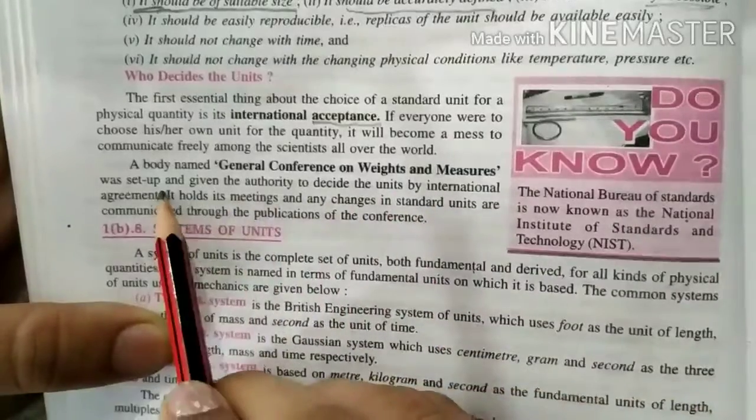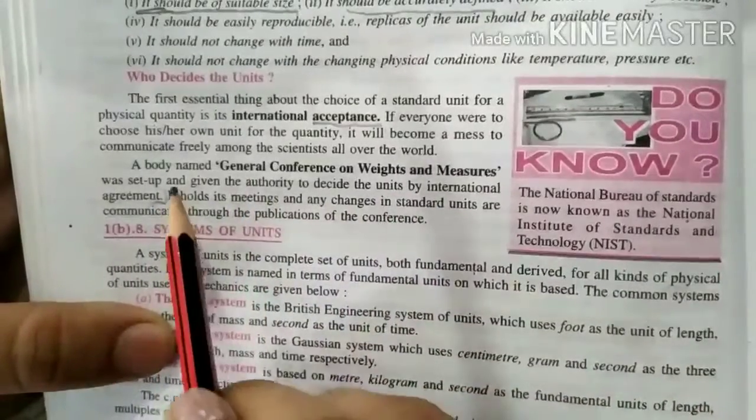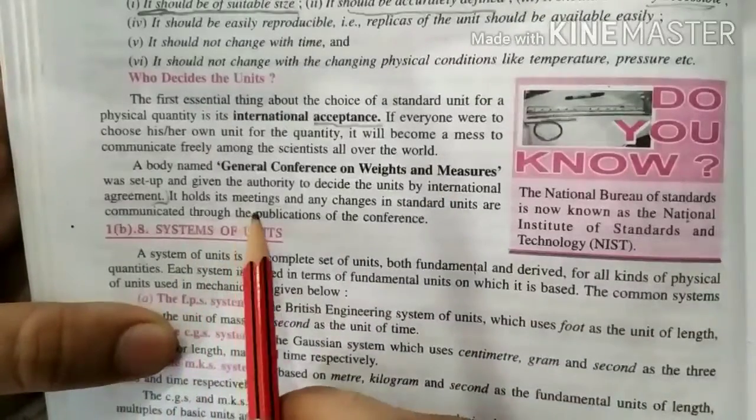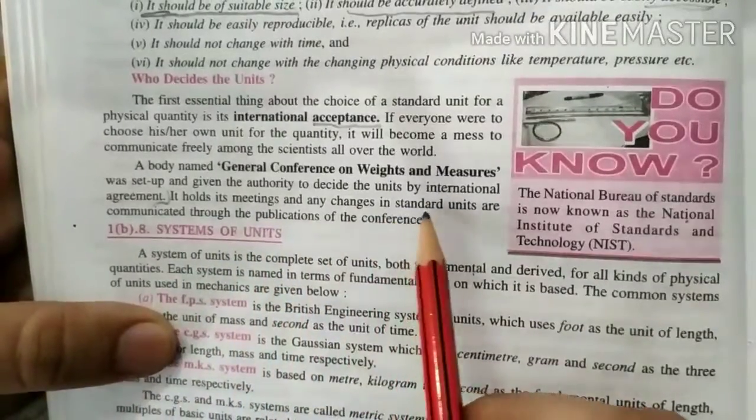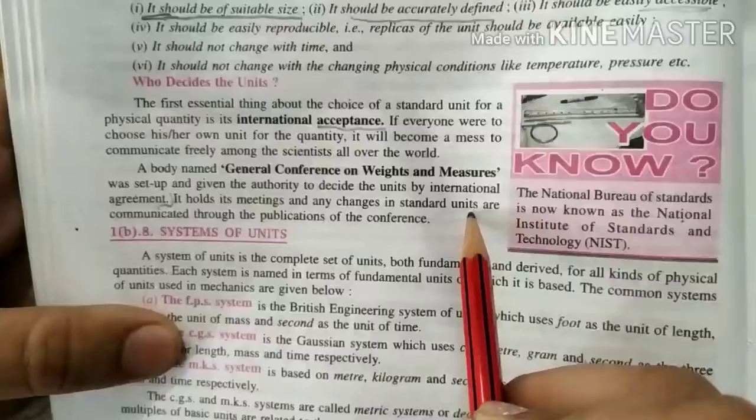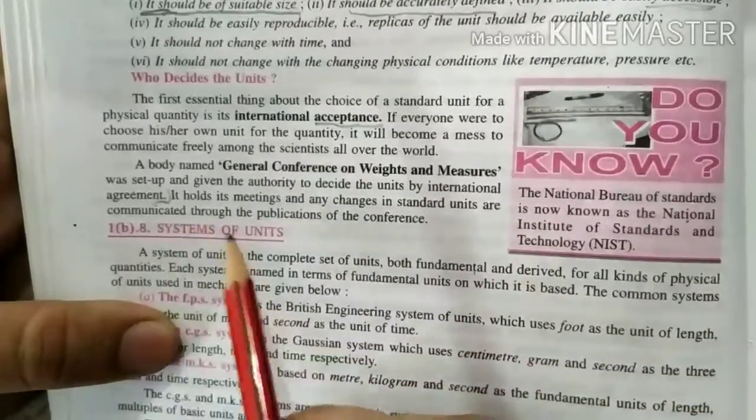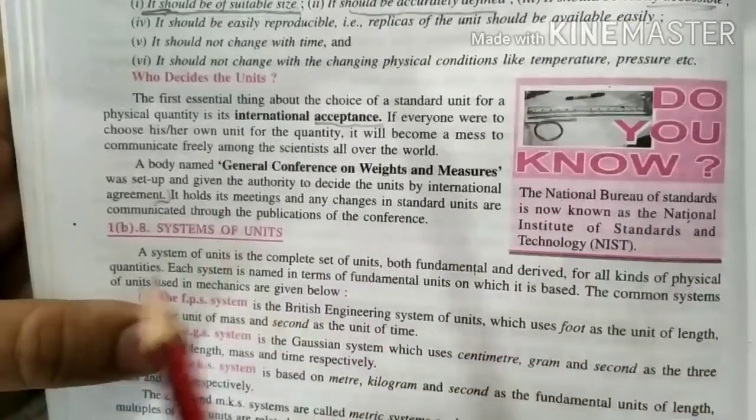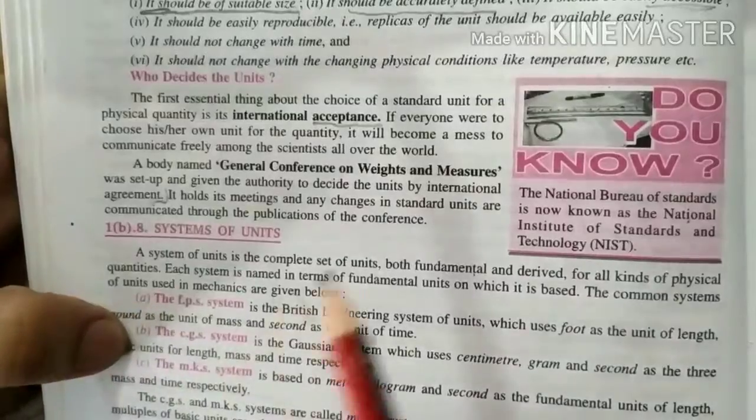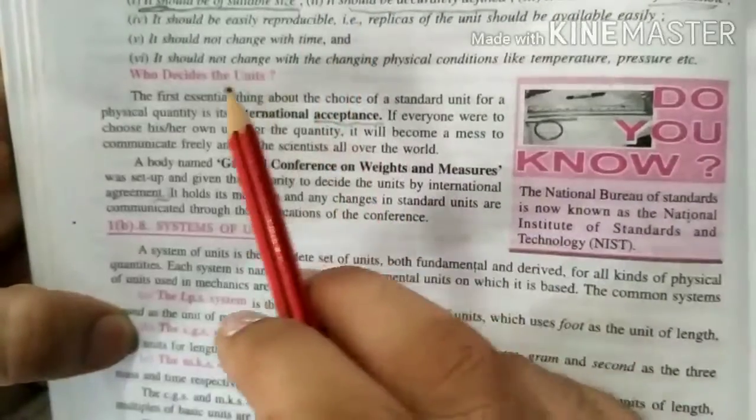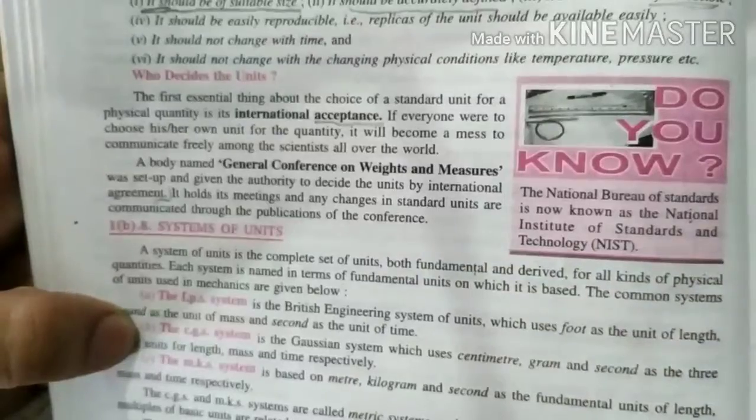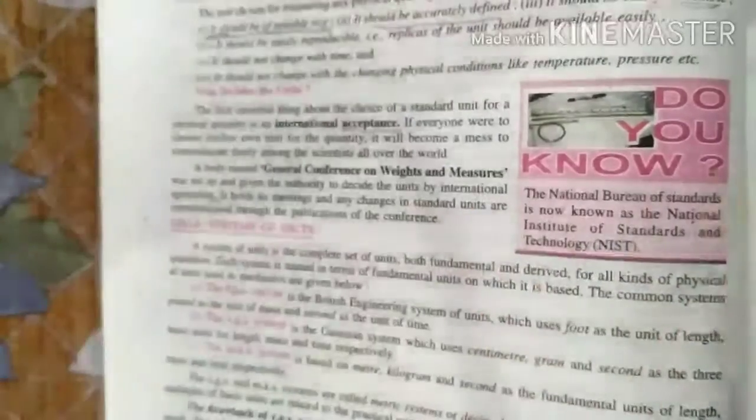By international agreement, a group of people holds its meetings and changes units if necessary. Then all countries communicate. This is how we decide to make standard units.